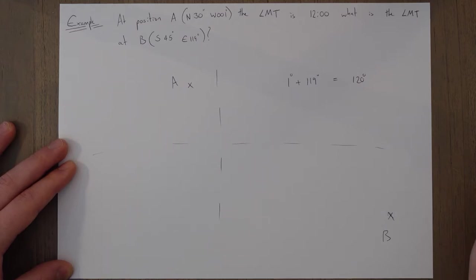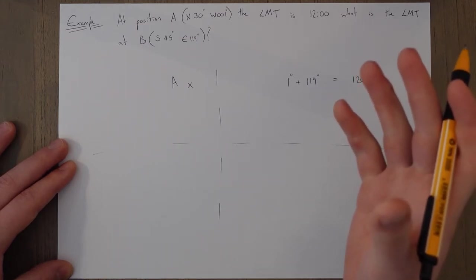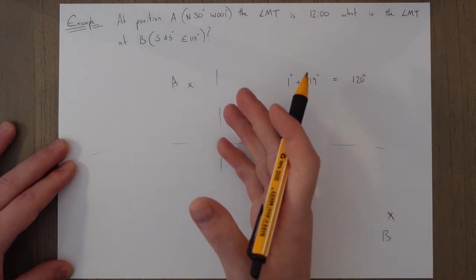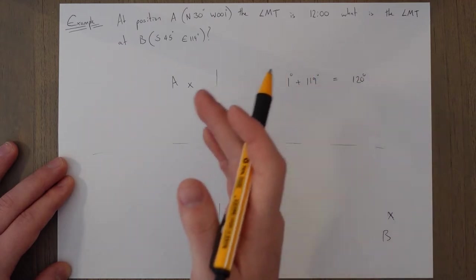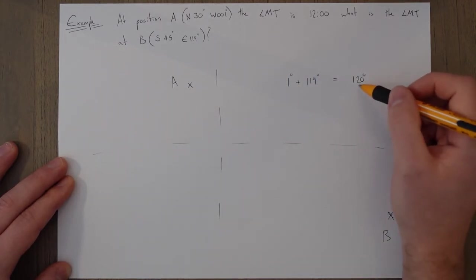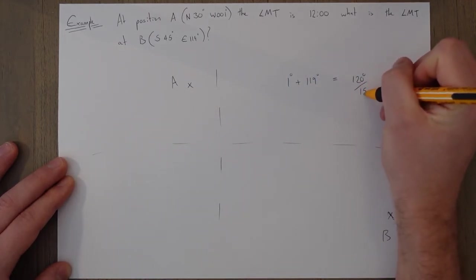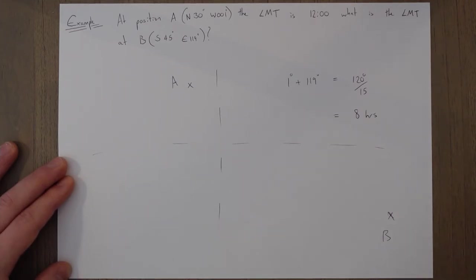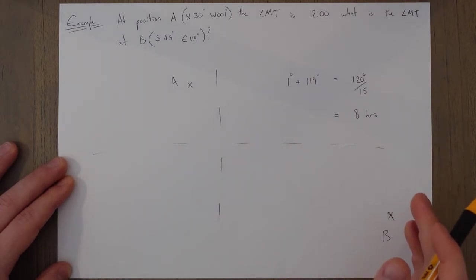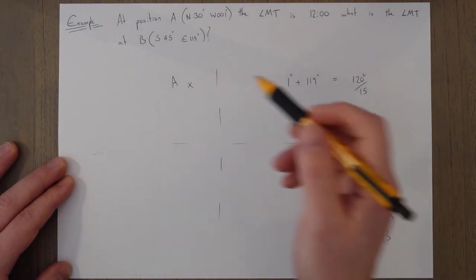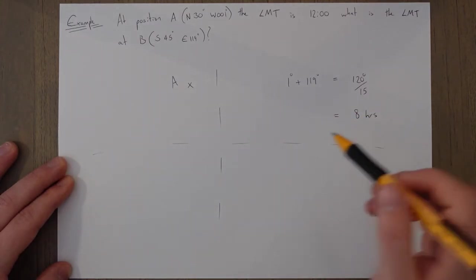And we can work out the time difference there. So every hour is a 15 degree change, so we divide this by 15 to find out the hours, eight hours. So we have an eight hour time difference between A and B. But which way are we going to add on the difference?